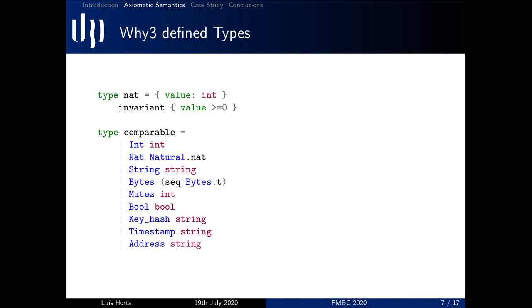For type nat, we simply defined it as an integer with an invariant that ensures that its value is always greater or equal than zero. As for type bytes, we defined it as a sequence of bytes which are simply bit vectors of size eight.